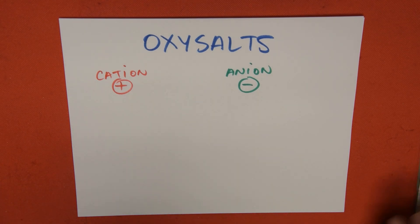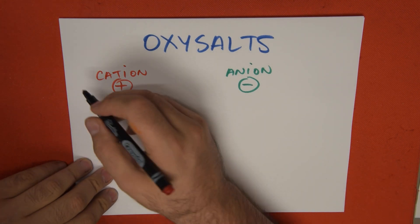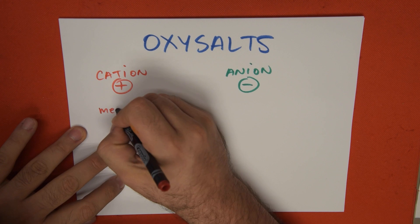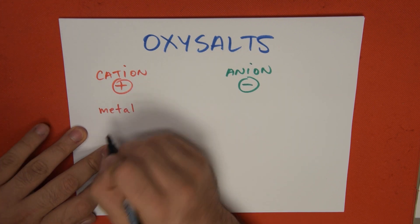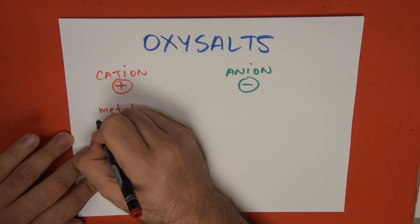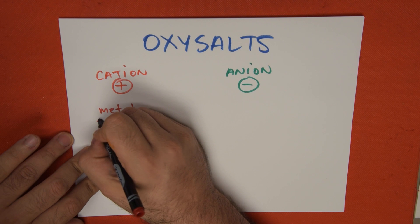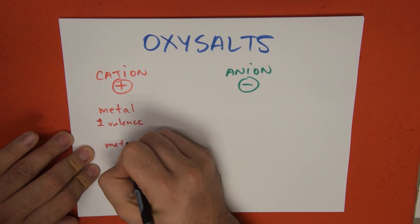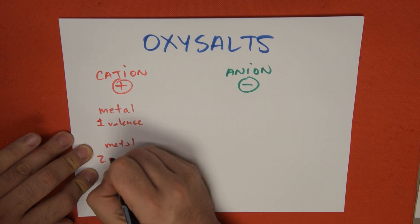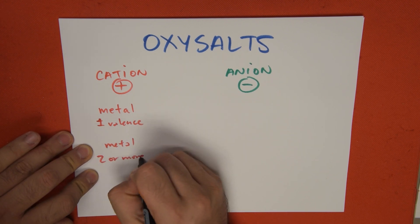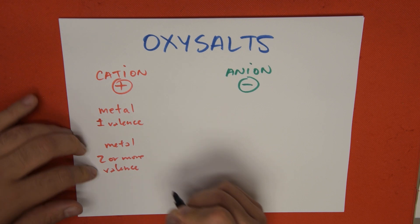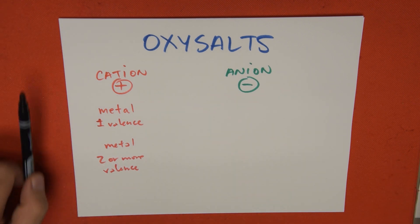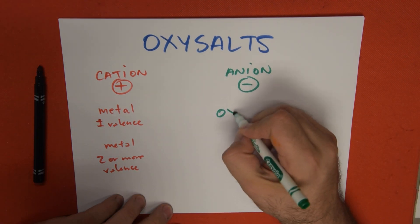For this video, we're going to be learning how to name oxysalts, and how do I identify oxysalts? Remember, oxysalts can be compounds that begin with a metal, that is a metal with only one valence, or we can also have metals with two or more valences. And the anion part is going to be an oxyanion.